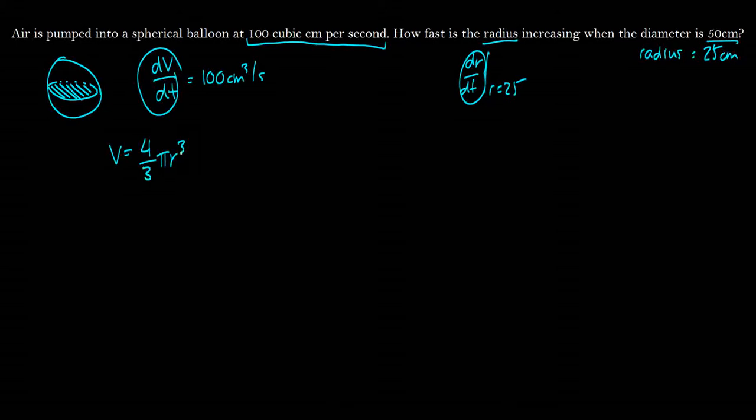So do we have a formula that relates the derivative of the volume with the derivative of the radius? Well, yeah, we have the volume of a sphere, which is equal to 4 thirds pi r cubed. If you don't know the formula off the top of your head, you might want to review some formulas of basic solids so that way when you get these questions in exams you don't get really confused. So now we will just differentiate both sides with respect to time.